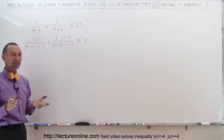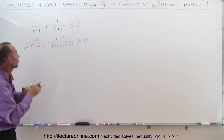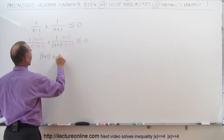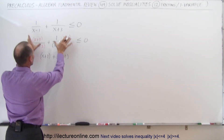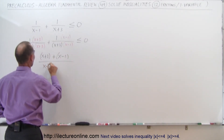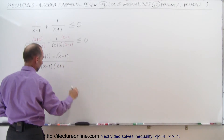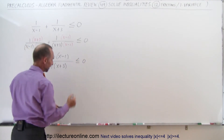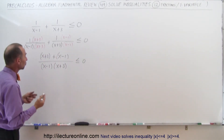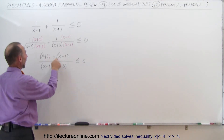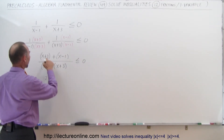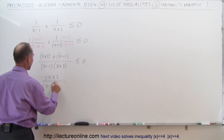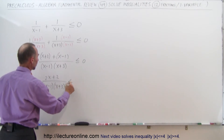Now we see that both fractions have the same denominator, so we can write them over the same denominator. This becomes (x plus 3) plus (x minus 1) — those are the two numerators — all divided by (x minus 1) times (x plus 3), less than or equal to zero. Now we can simply add this together. In the numerator, we get 2x, and 3 minus 1 is plus 2, divided by (x minus 1) times (x plus 3), less than or equal to zero.